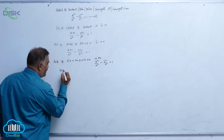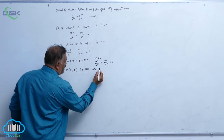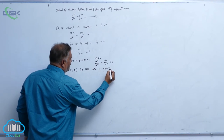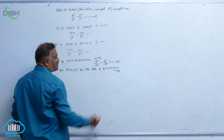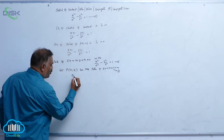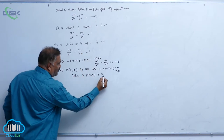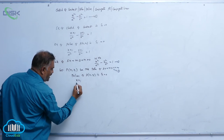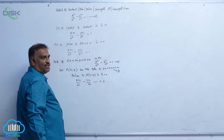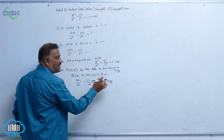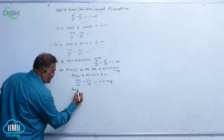So let P(x1, y1) be the pole of lx plus my plus n equal to 0 — this is equation 1. The polar of P(x1, y1) is S1 equal to 0: xx1 by a square minus yy1 by b square minus 1 equal to 0 — this is equation 3. Now equations 2 and 3 represent the same polar, so comparing equations 2 and 3.